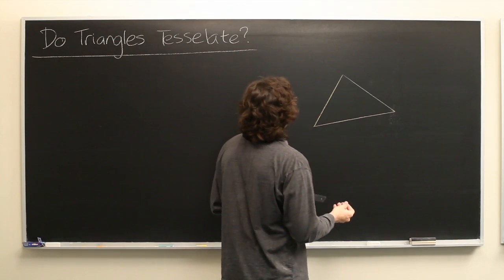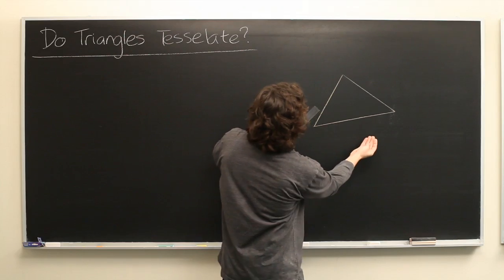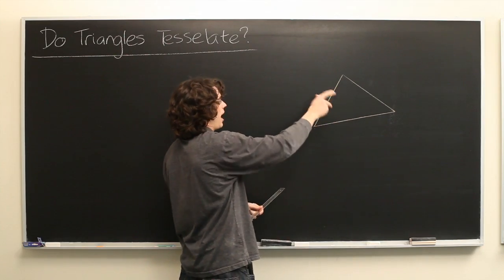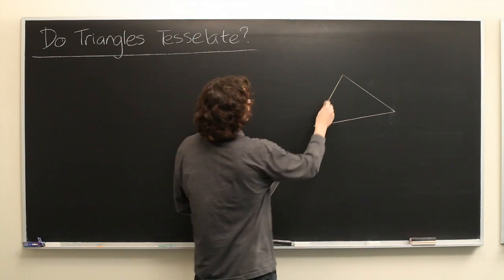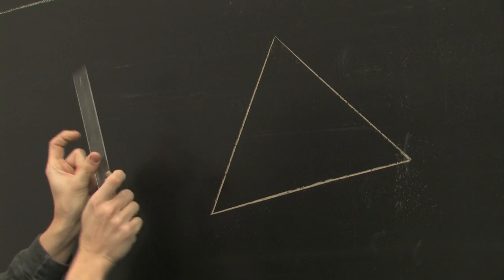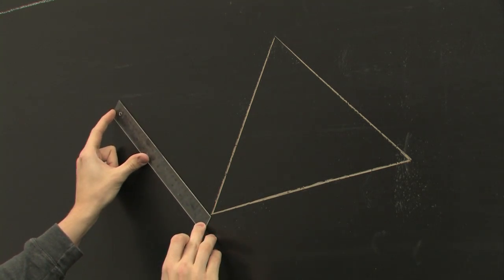There's a simple trick that you can do. By rotating a triangle around any of its sides, you can create a parallelogram. So that's what we'll do first.